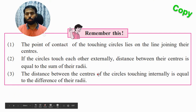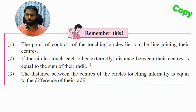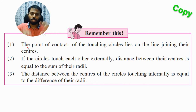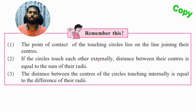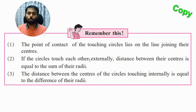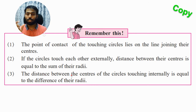If you remember these three points you should be able to solve all the sums in Practice Set 3.2. First: the point of contact of touching circles lies on the line joining their centers. Second: if two circles touch each other externally, the distance between centers equals the sum of their radii. Third: if they touch internally, the distance equals the difference of their radii.